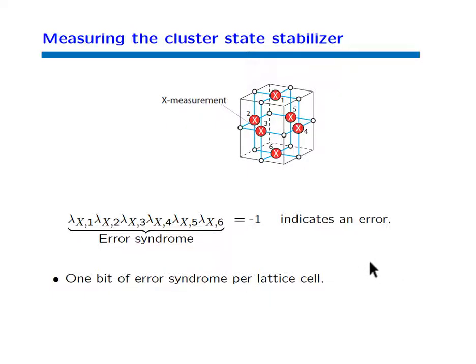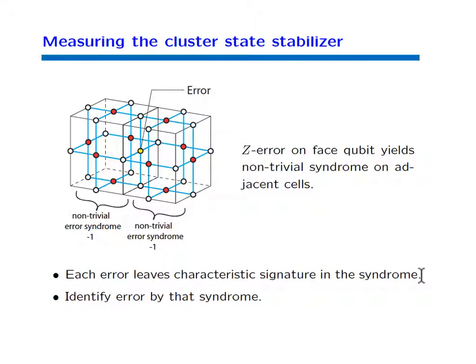This is how we identify errors — we have one bit of syndrome per elementary cell. Every error has its characteristic syndrome pattern. For example, an error on a particular qubit produces a non-trivial syndrome in the cube to the left and a non-trivial syndrome in the cube to the right, and no other nearby error has this same syndrome. So you can identify each error by its syndrome.